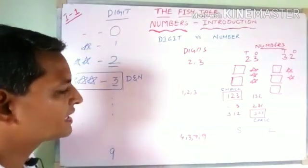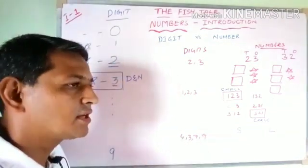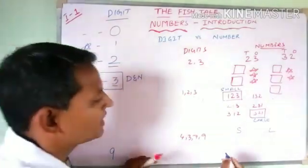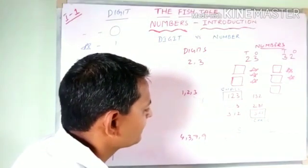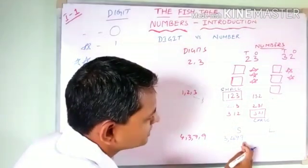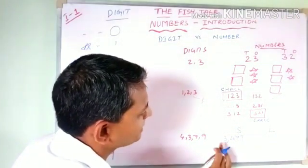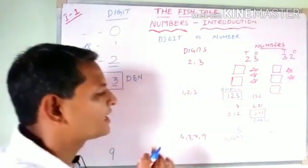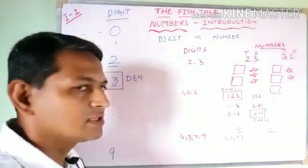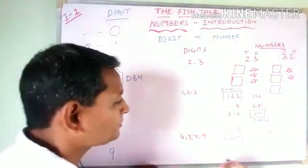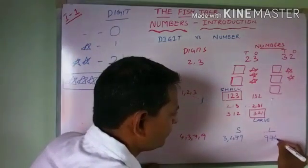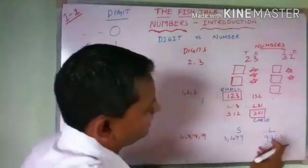Can you write the smallest as well as the largest number using the digits 4, 3, 7, and 9? To write the smallest number, arrange in ascending order: 3, 4, 7, 9 — so 3479 is the smallest number, with 9 in thousands place, 7 in hundreds, 4 in tens, 3 in ones. For the largest, write in descending order: 9743.